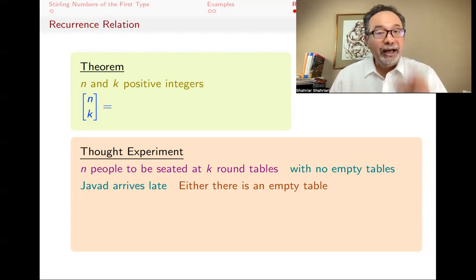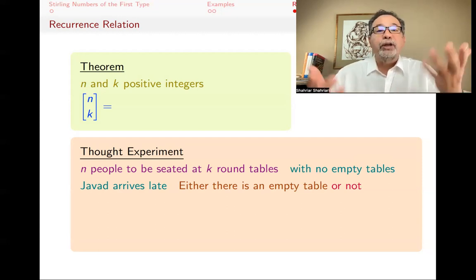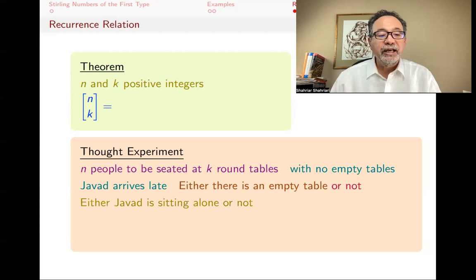But when Javad comes, it's possible that one of the tables is empty. If that's the case, Javad has got to go sit at that table alone. Or it might be that not. All the k tables, there's got someone at them, and so Javad has got to join one of the tables. So those are the two possibilities. So either Javad is sitting alone or not.